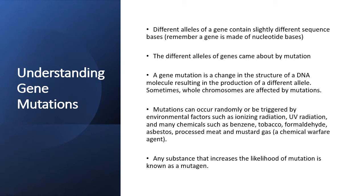A gene mutation, as you can see on the third bullet point, is a change in the structure of a DNA molecule resulting in the production of a different allele. For example, if within a particular population everyone is dark skinned and produces a lot of melanin, there might be a mutation in the genes — caused by a variety of things you can see on the slide — that can cause a different allele to be produced, resulting in some members of the same population producing a different skin color.